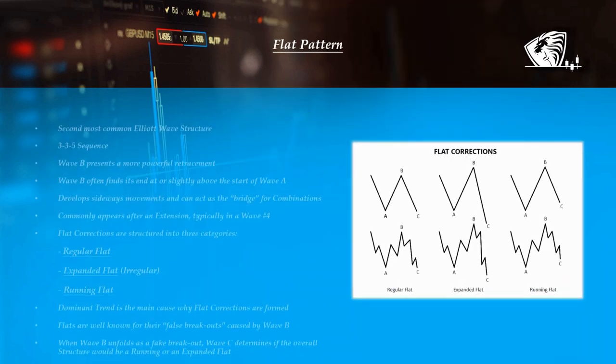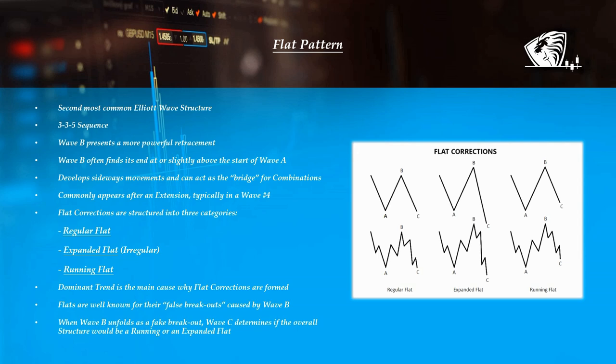The flat is the second most common pattern, and it always shows a 3-3-5 sequence because it lacks sufficient force. Hence the reason why wave B shows a more powerful retracement, terminating at or slightly beyond the start of wave A. It is well known for its sideways movements and can also act as the bridge for combinations. Flats tend to appear before or after periods which involve an extension, most commonly in a wave 4. They come in three forms: regular, expanded or irregular, and running flat. During this type of correction, the dominant trend shows considerable retracement. Therefore, flats are well known for their fake breakouts caused by wave B, which in turn cause exaggerated or even limited wave C reactions, depending on its form.